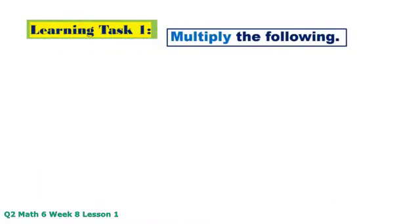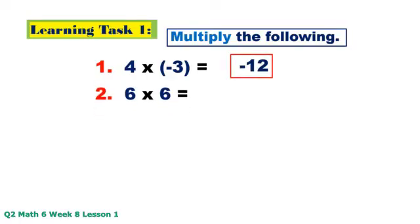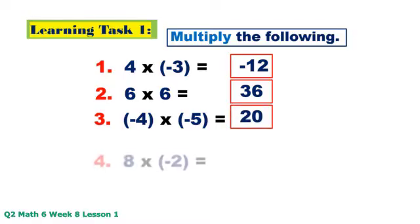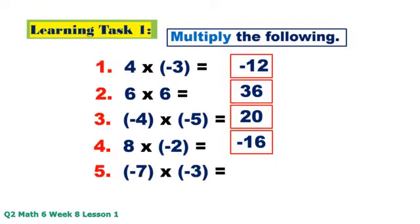Learning Task 1 — Multiply the following. Number 1: positive 4 times negative 3 equals negative 12. Number 2: positive 6 times positive 6 equals positive 36. Number 3: negative 4 times negative 5 equals positive 20. Number 4: positive 8 times negative 2 equals negative 16. Number 5: negative 7 times negative 3 equals positive 21.